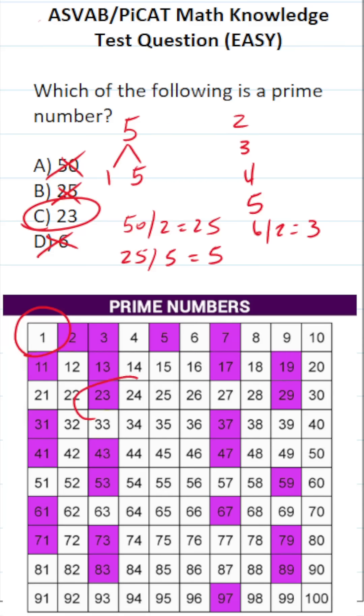If you look at our chart here, you can see that 23 is, in fact, a prime number.